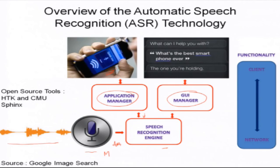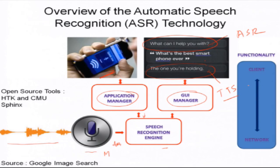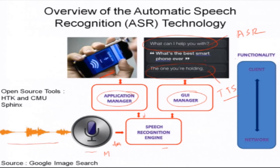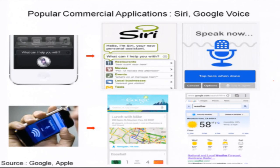For example, you are talking to a phone and it asks 'what can I help you with?' You say 'what is the best smartphone ever' and it says 'the one you are holding.' This involves both ASR as well as text to speech synthesis, which we call TTS. One important aspect when doing recognition on a cell phone is that these are very resource-constrained devices — the computing power is less compared to a desktop, and therefore typically the functionality runs in a client-server or client-network mode.